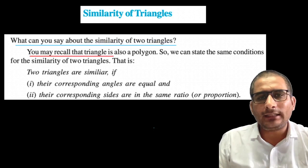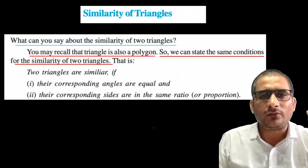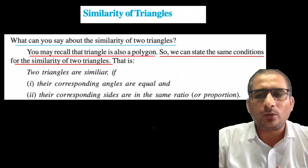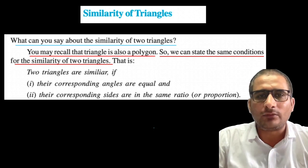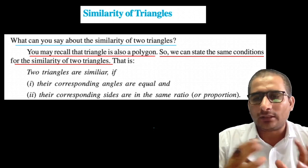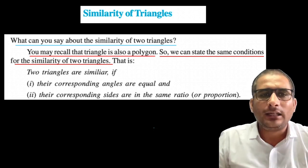You may recall that the triangle is also a polygon. So we can state the same conditions for the similarity of two triangles. Triangle is also a type of polygon, so the conditions for polygons are also the same for triangles, right?